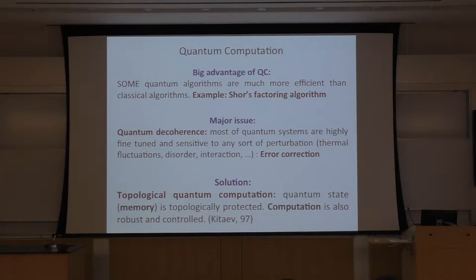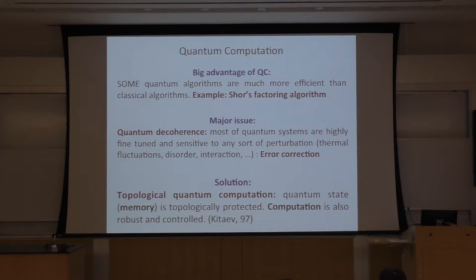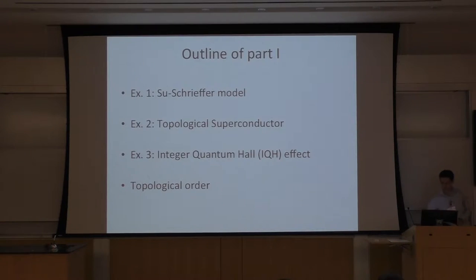But in 1997, Alexei Kitaev came up with a very beautiful idea that could resolve this problem. He proposed that if we take a topological system, which is robust by definition, then we don't have this quantum decoherence, at least at low temperature — a temperature much smaller than the bulk gap. By doing that, we can obtain a system whose quantum memory is robust and we also have much control over information processing. So we have a fault-tolerant quantum computer.